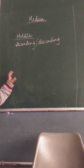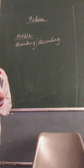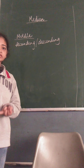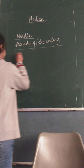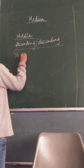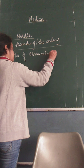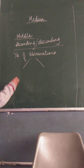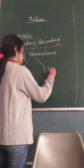And now, how we find out? To find out median, we are talking about observations. There can be two cases. The number of observations that I have can be even in numbers or they can be odd in numbers.